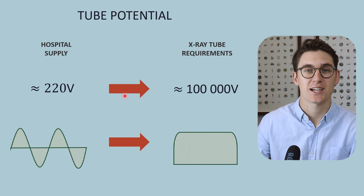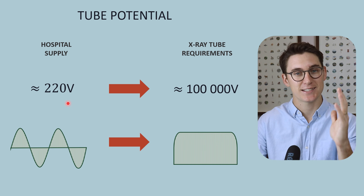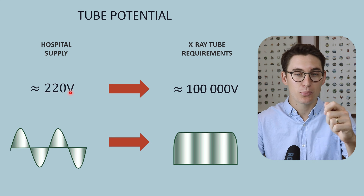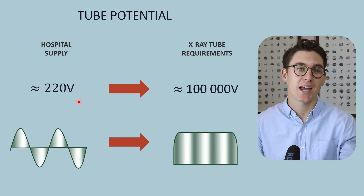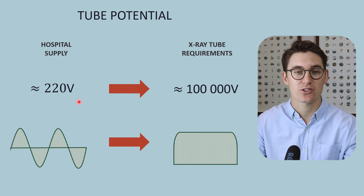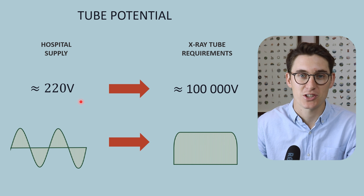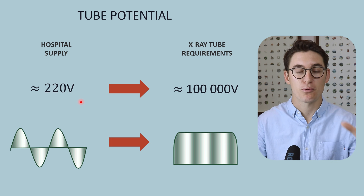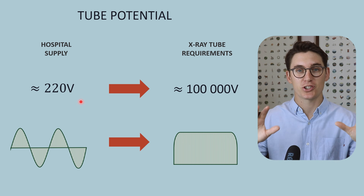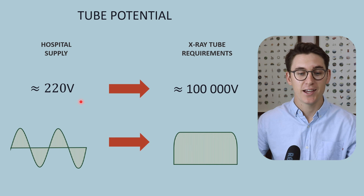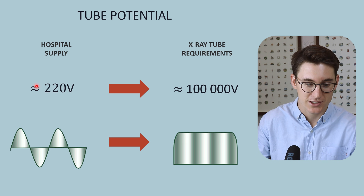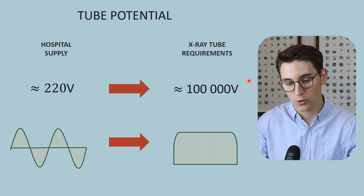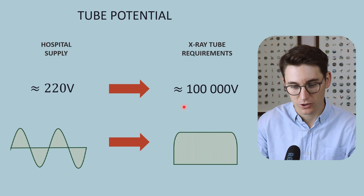Another issue is that the supply is a set voltage, and we want to be able to manipulate that voltage — to change the kVp in our x-ray tube depending on the type of image we are trying to create. The primary and secondary x-ray circuits work together to increase the hospital voltage supply to the order of kilovolts.